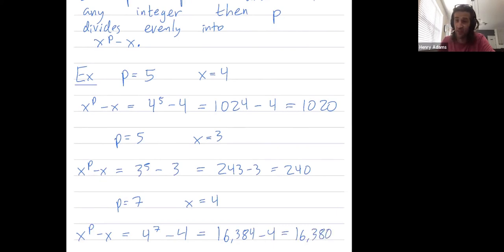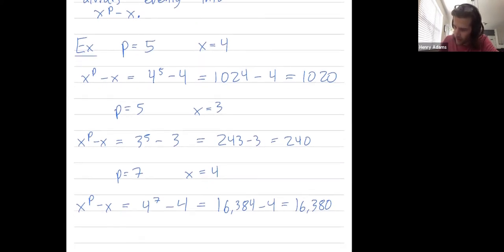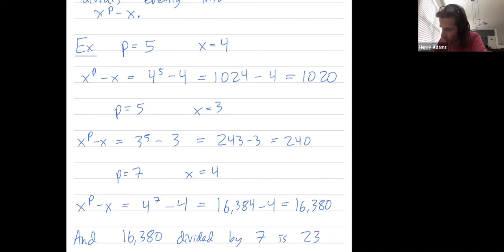which is, so 4 to the 7th power is 16,384. We subtract 4 to get 16,380. Okay, wow, 7 should divide into that. It's not at all clear to me that it does. So let's check 16,380 divided by 7. It should be an integer. And 16,380 divided by 7 is 2,340.